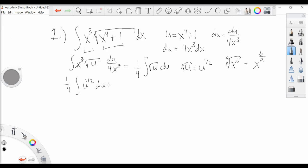We're going to rewrite our integral as one-fourth u to the one-half du. Using the reverse power rule, we add one to the exponent and then divide. So one-half plus one equals three-halves. We have u to the three-halves, and then we divide by three-halves.